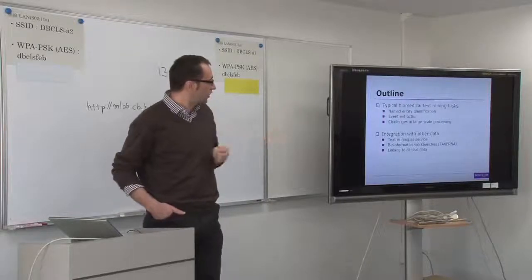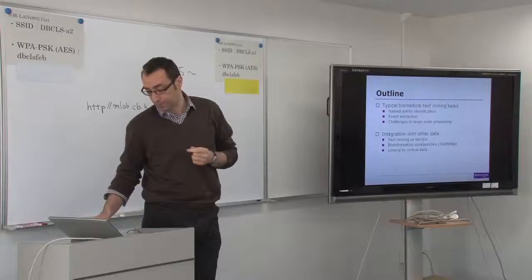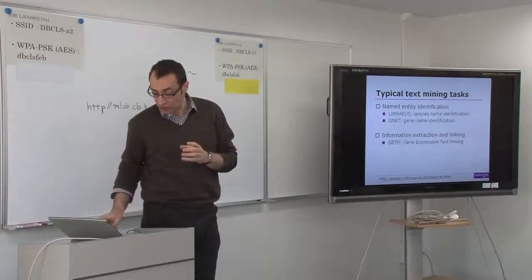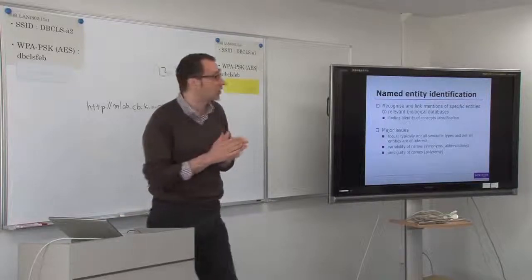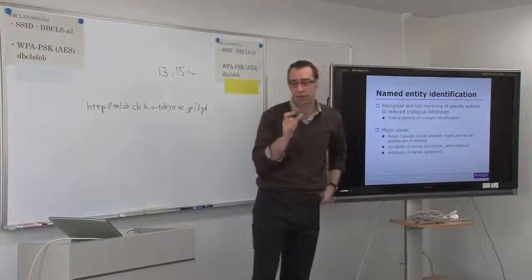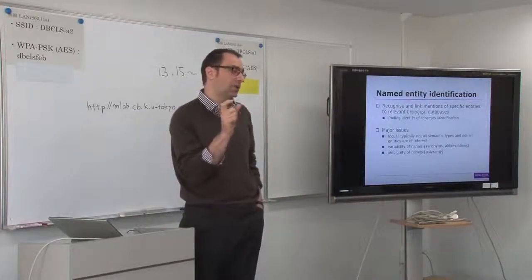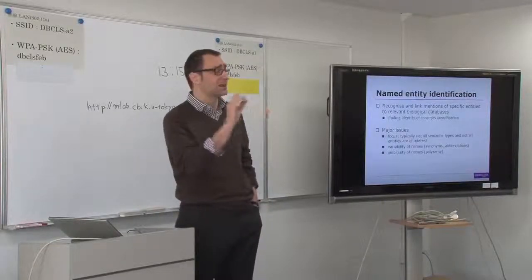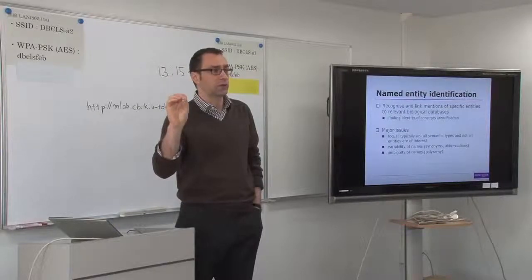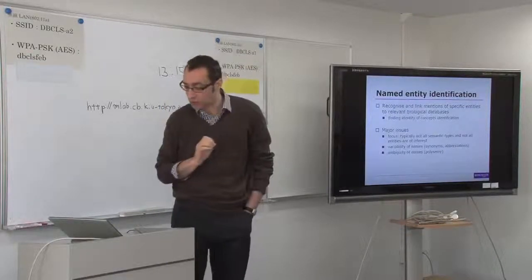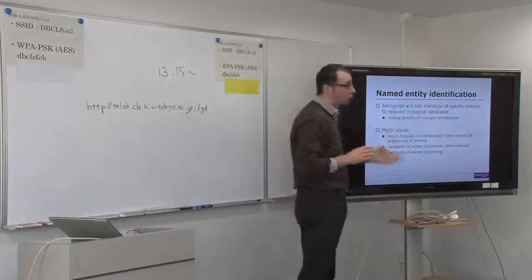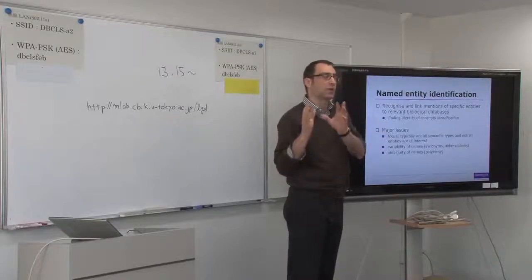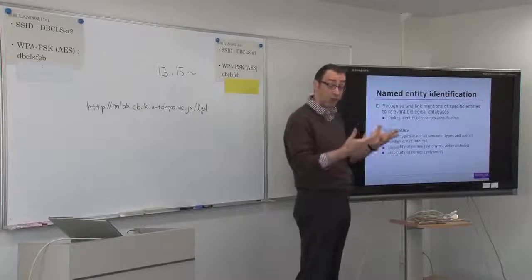The two typical tasks I'll cover are named entity identification and information extraction. For named entity identification, the task is to recognize and link mentions of particular entities or concepts that appear in biomedical literature — genes, species, drugs, tissues, and so on. The idea is to link them unambiguously to biological databases so that we know we are talking about a particular gene or species. A major issue is focus: biologists are typically not interested in all semantic types — they are interested in particular types and particular concepts related to that. How to focus your named entity identification is a huge problem.